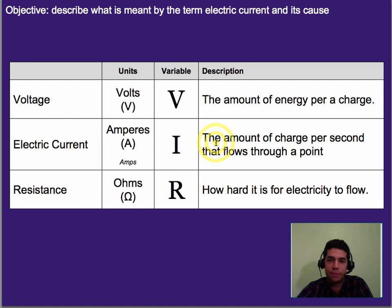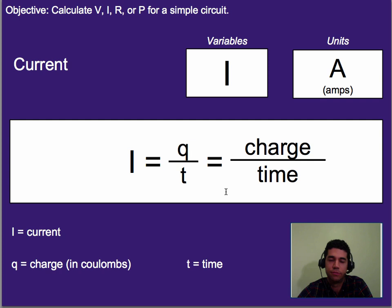Current, measured in amps, is the amount of charge per second, or it's basically how fast charge is flowing through the circuit. And resistance, like I just said, is how hard it is for electricity to flow.